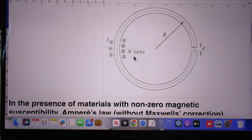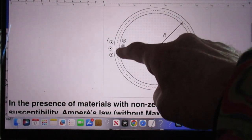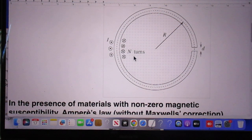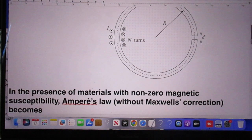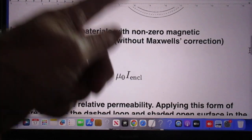And what counts now is the current that goes through the open surface. I chose the open surface to be flat. That is not necessary. It can have any shape as long as it is attached to that closed loop. And the current that penetrates through that open surface is what matters in Ampere's law, which in this case is N times I because the current goes N times through that open surface. And that is what people then call I enclosed.